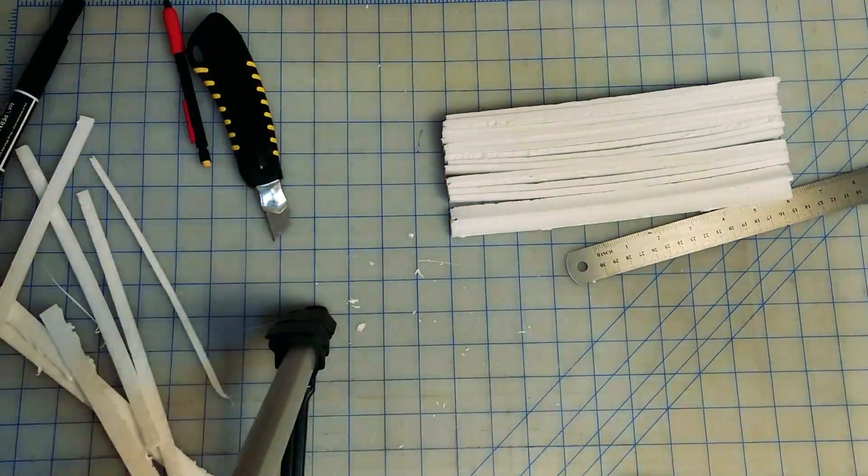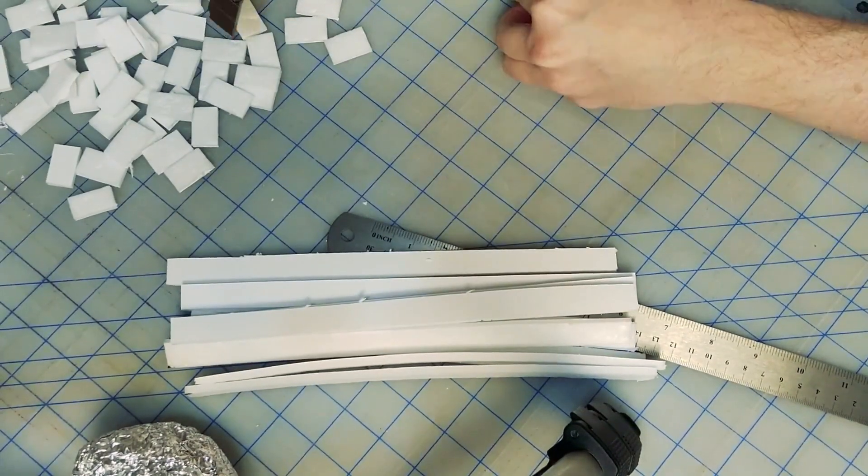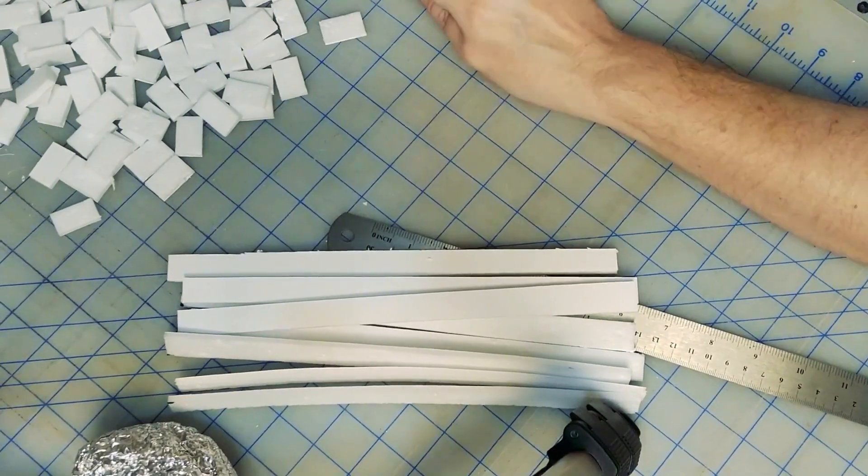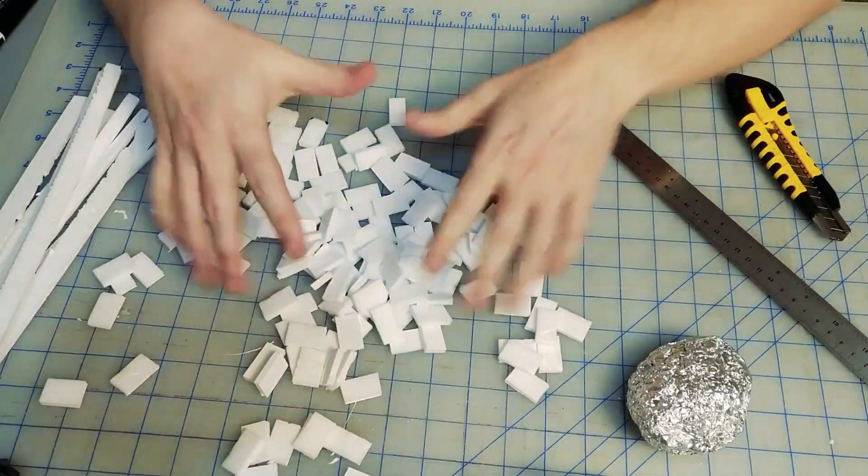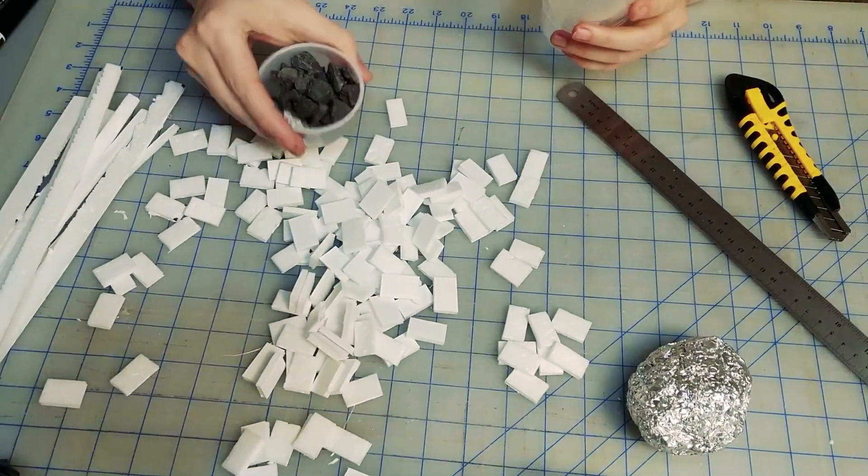After you have a lot of the lengths cut up, you can start cutting those into your brick sections. Here you have a lot of bricks. I'm going to take the bricks, stick some stones into a cup, and shake them up like hell.